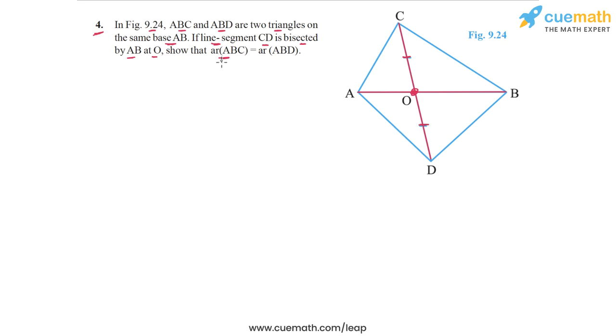Show that the area of triangle ABC will be equal to the area of triangle ABD. This is what we have to show in this problem. Let me first explain the reasoning that we will use to solve this problem, and then I will write out the proof.